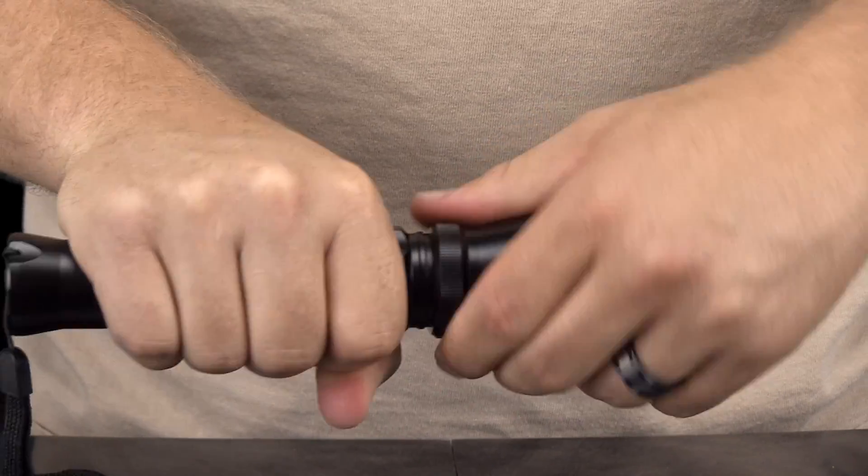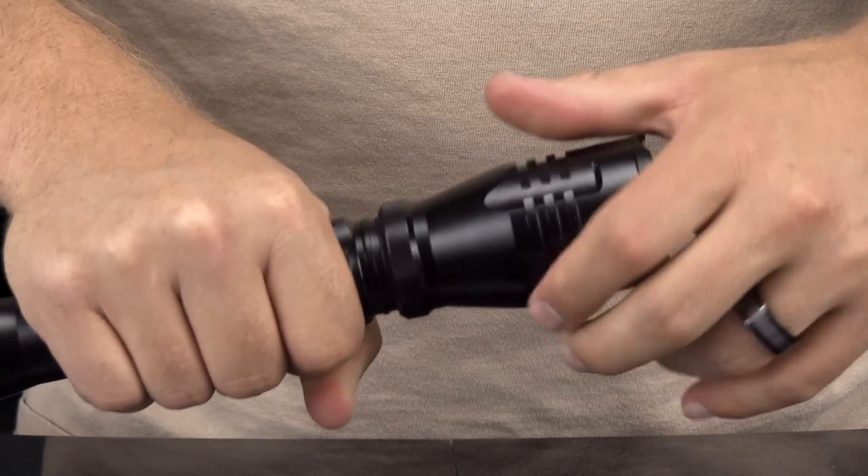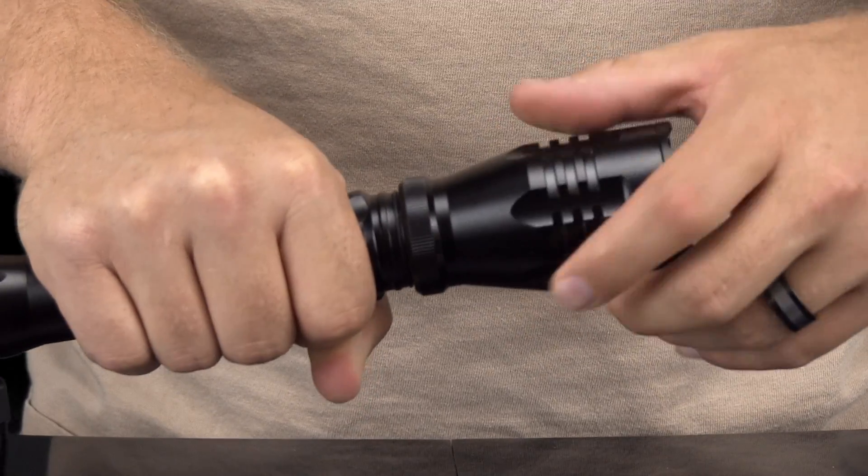Be sure to grip these two points only, as gripping further down on the light housing will simply unscrew the internal charge port.